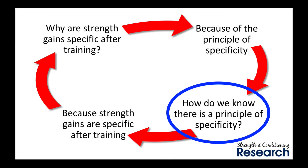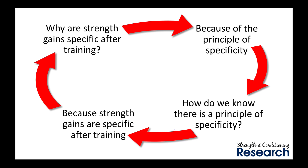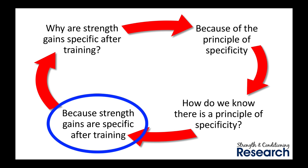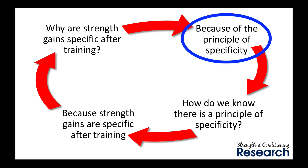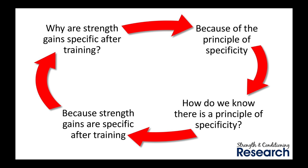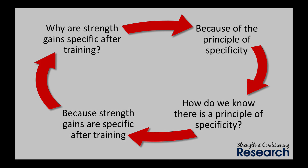Let's take a look at that circular reference in action. How do we know there is a principle of specificity? Because strength gains are specific after training. And why are strength gains specific after training? Because of the principle of specificity. As you can see, going around in a circle doesn't really help our understanding of the principle of specificity.